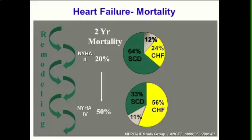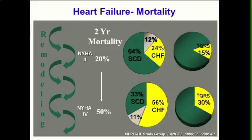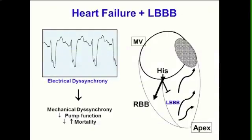How can we address this? We know that as remodeling occurs, functional class deteriorates and sudden cardiac death risk decreases, but that is taken care of with defibrillator therapy. Pump function as a factor in mortality increases. Coincidentally, the incidence of a prolonged QRS also increases — to almost 30% once functional class has deteriorated. Perhaps there's an association. And this was the rationale for CRT initially, rarely applied to left bundle branch block.